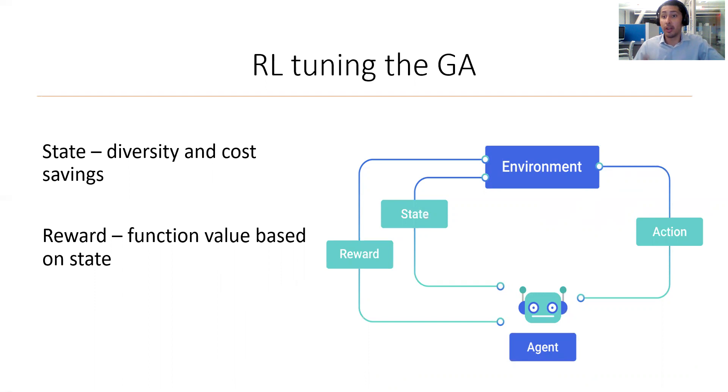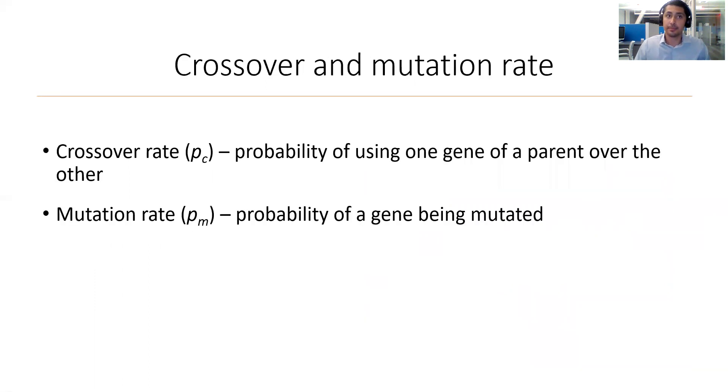The crossover rate is a value that is set at the initialization of the algorithm to service the crossover operation. It determines the probability of choosing one parent's gene over the other. Likewise, the mutation rate determines the probability of a gene being mutated. These values are traditionally kept unchanged throughout the execution of the algorithm, but this work decided to diverge from that to explore its benefits.